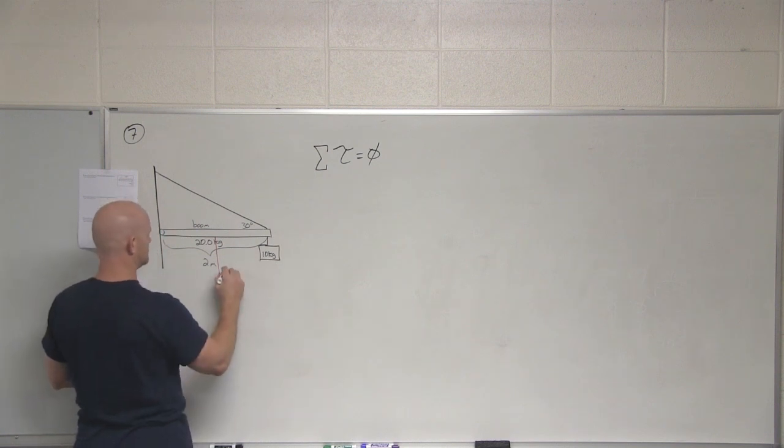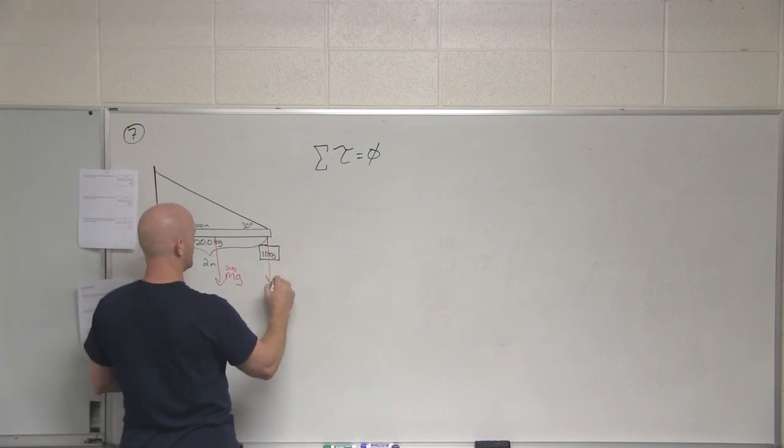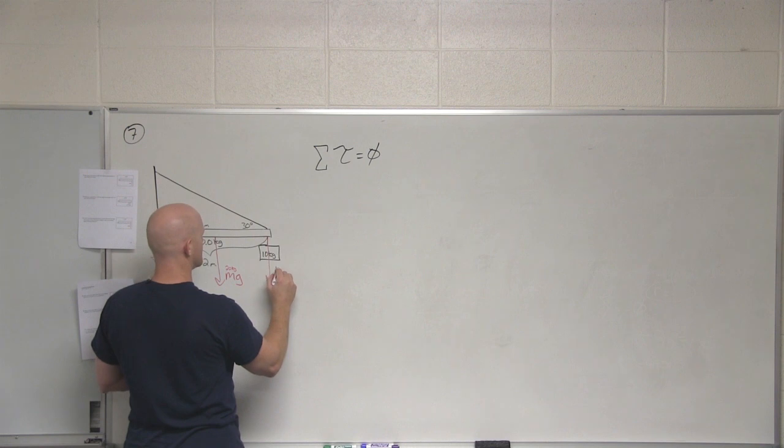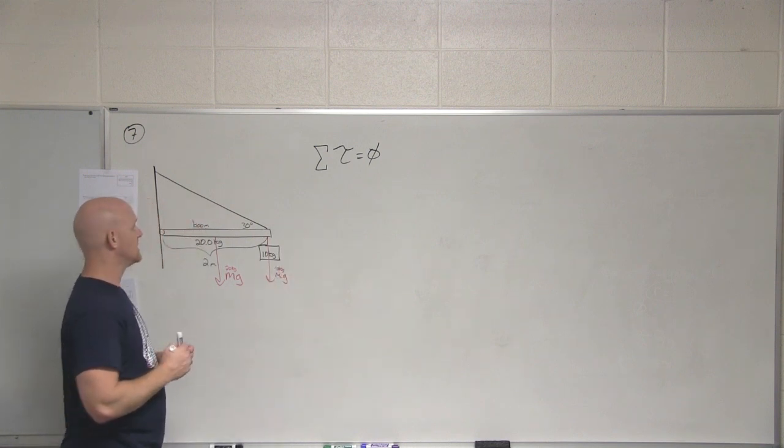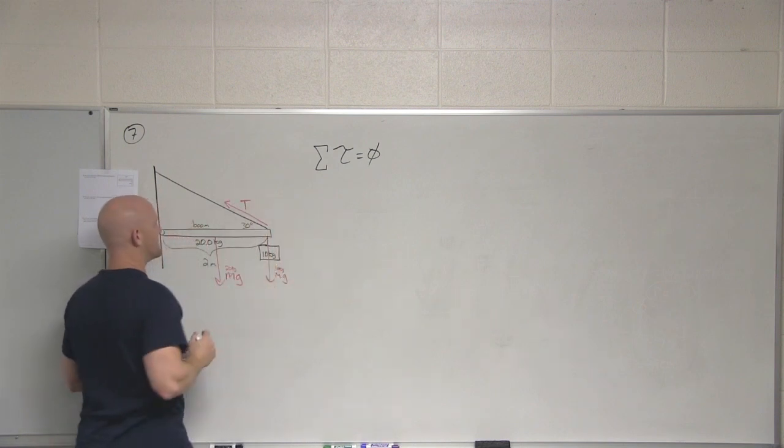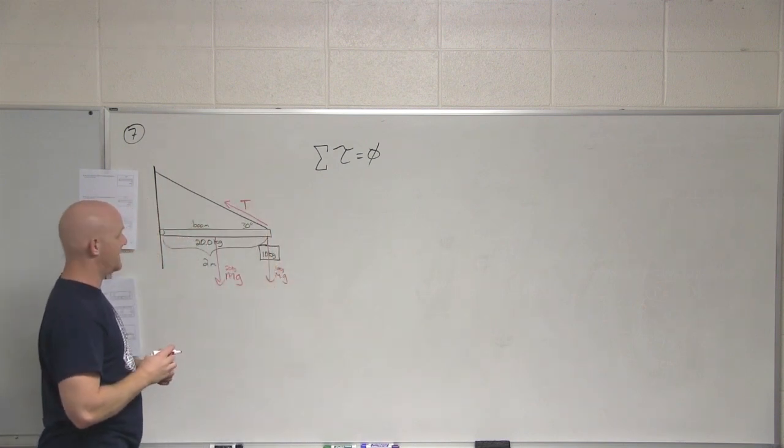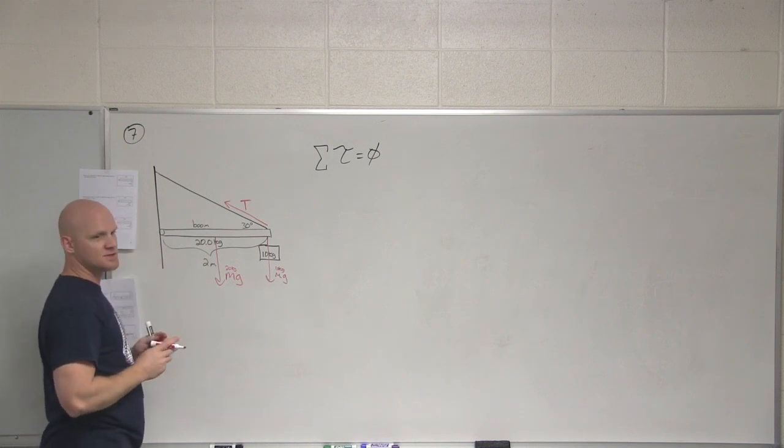Gravitational force of the boom itself. Where's that concentrated? Good. Cool. Yeah, 10 kilogram sign hung right there. That's another mg, in this case for the 10 kilograms. Cool. What else? We've got the tension in the cable pointing 30 degrees above the horizontal. What else? So it's the force at the hinge.